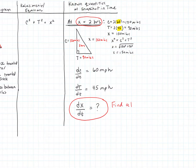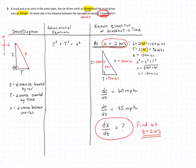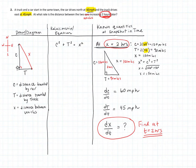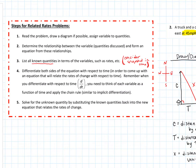That's what we're looking for — I often write the unknown right in with the known quantities to keep track of my goal. Now the next step is to differentiate both sides of our equation with respect to time. We think of each variable as a function of time — C, T, and X are all changing quantities as time goes on.